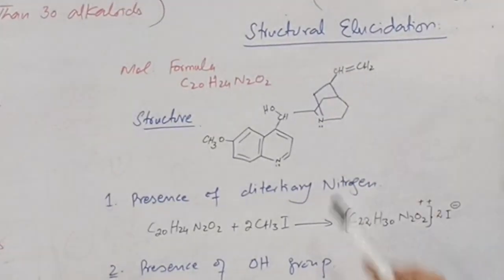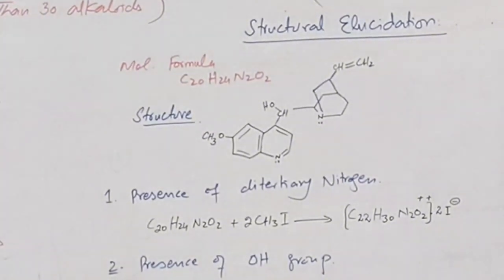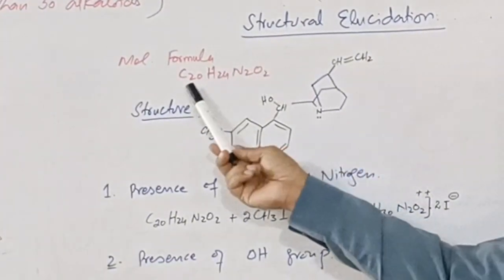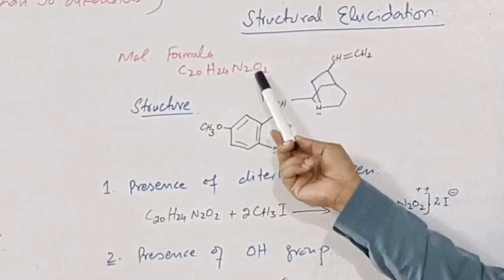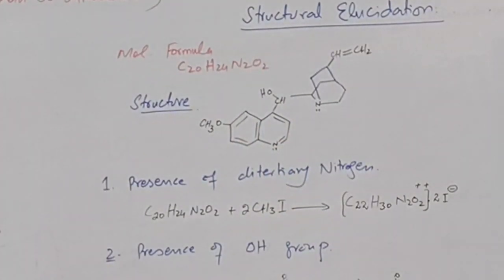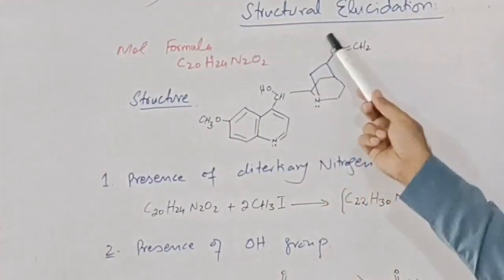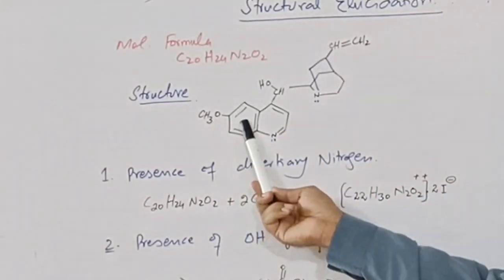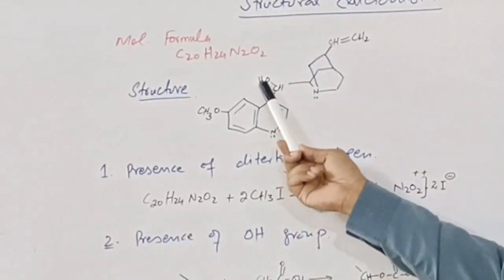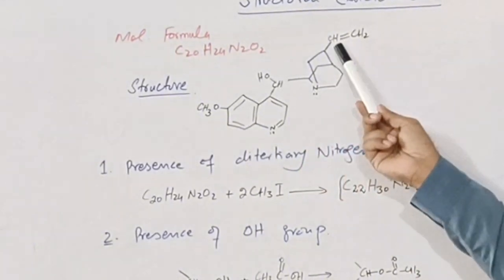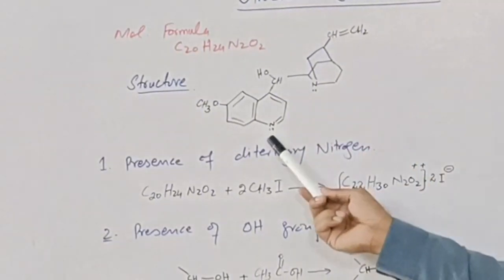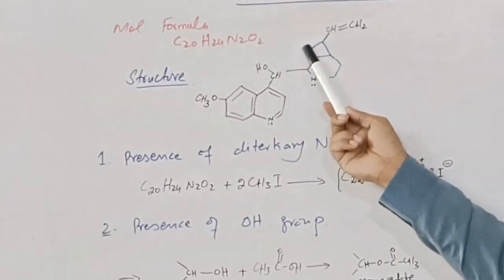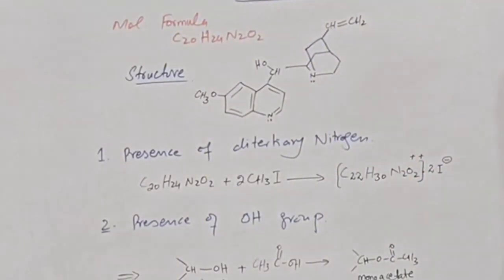I will discuss structural elucidation. Elemental analysis shows that the molecular formula of quinine is C20H24N2O2. Its structure contains a methoxy group, a quinoline nucleus, a hydroxy group, a vinyl group, a nitrogen atom, and a ring bridged with two carbons.